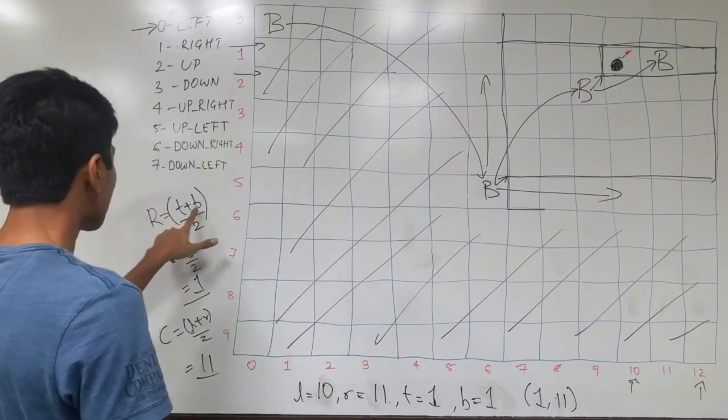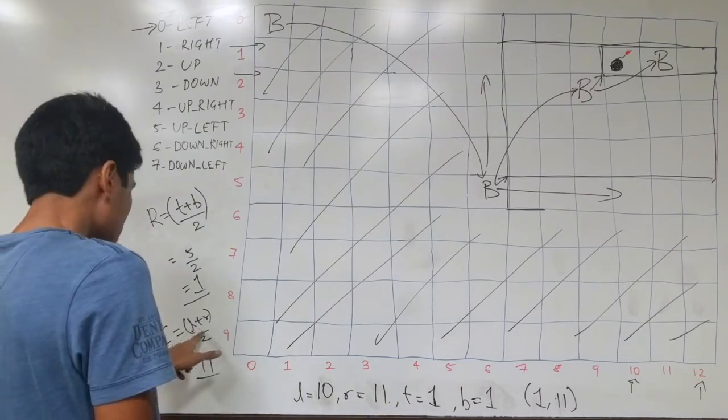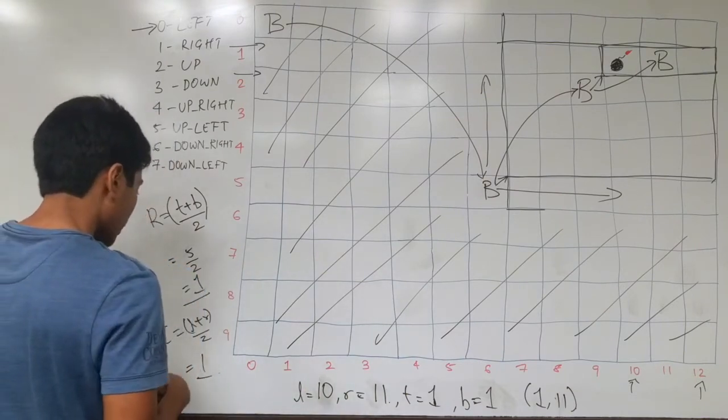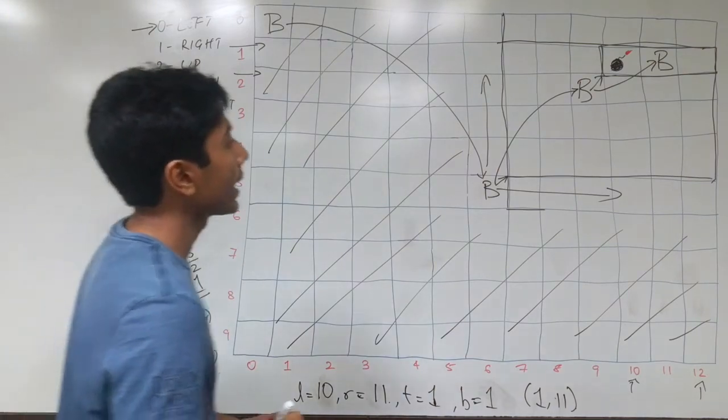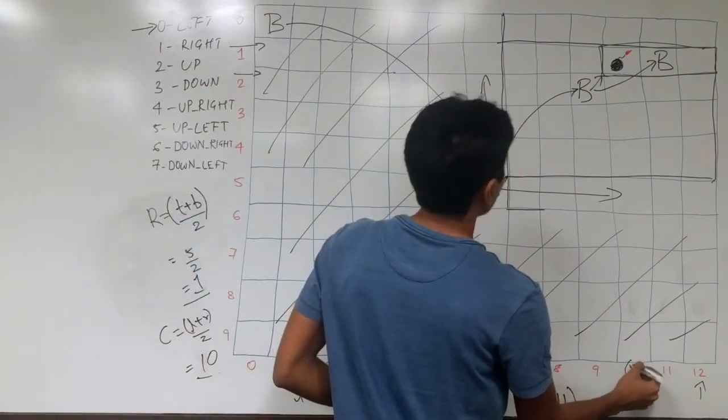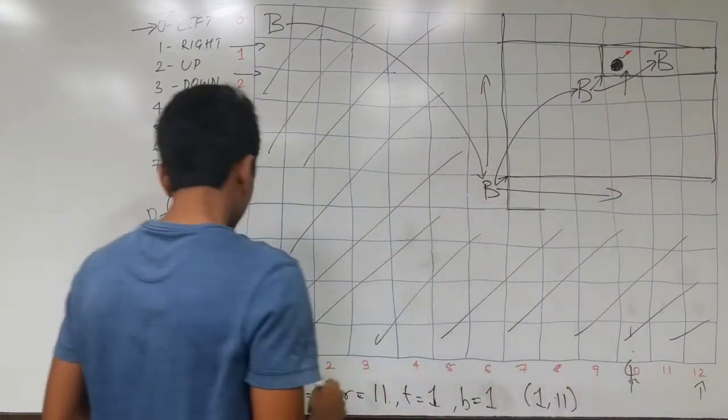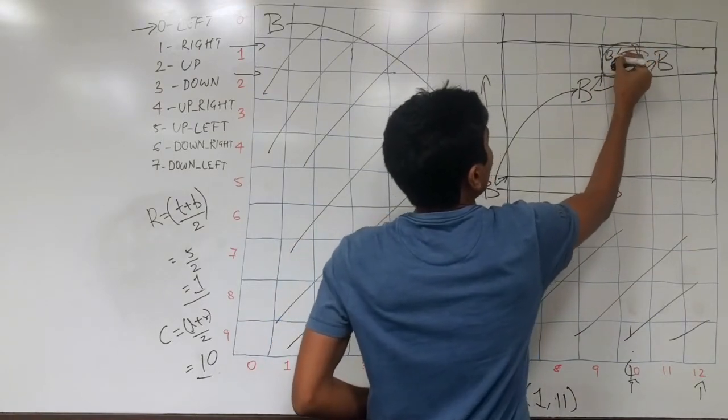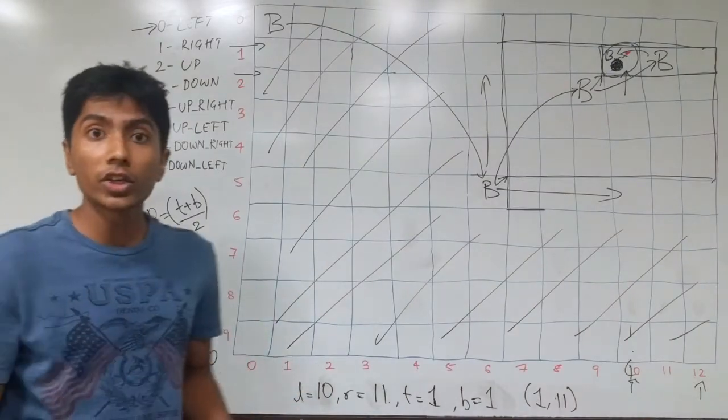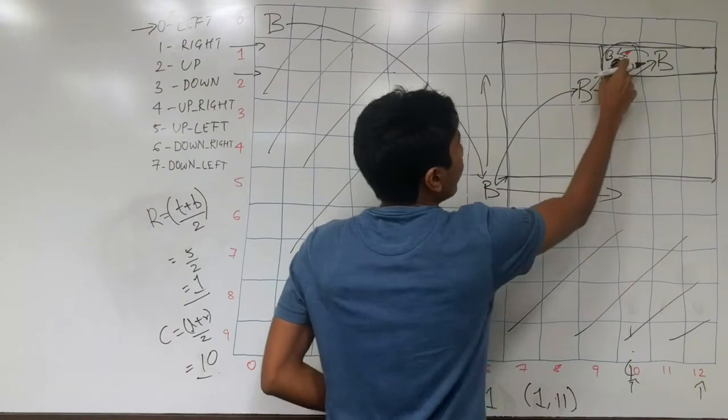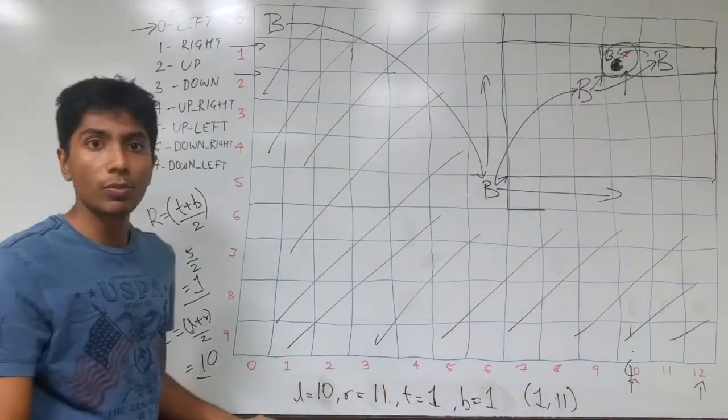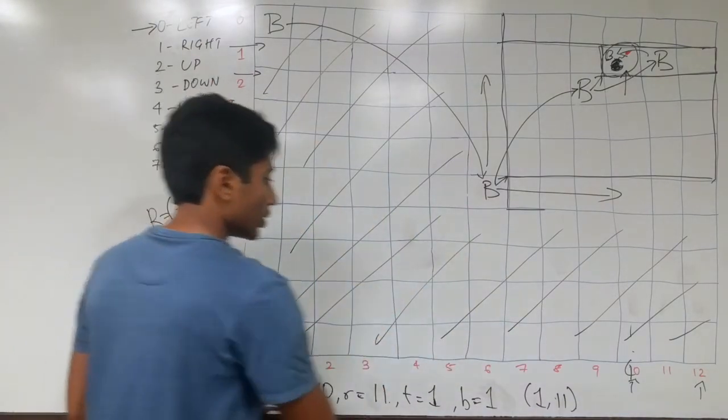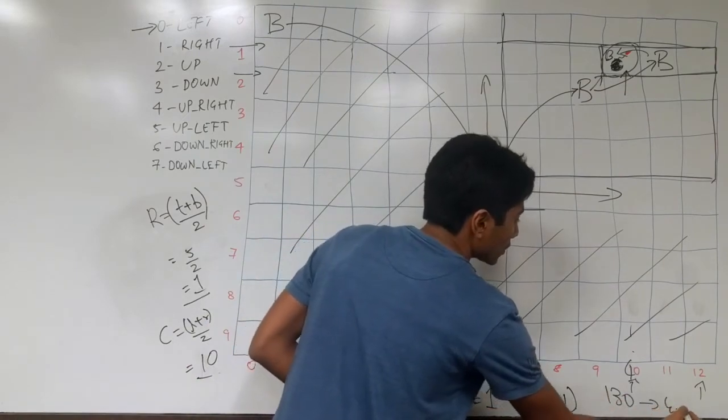One comma 10 gives you this and now Batman reaches the bomb and defuses it. So how many turns did you take? One, two, three, four—four turns to defuse the bomb on a 13 by 10 board, that is 130 cells, and you just took four turns to solve this problem.